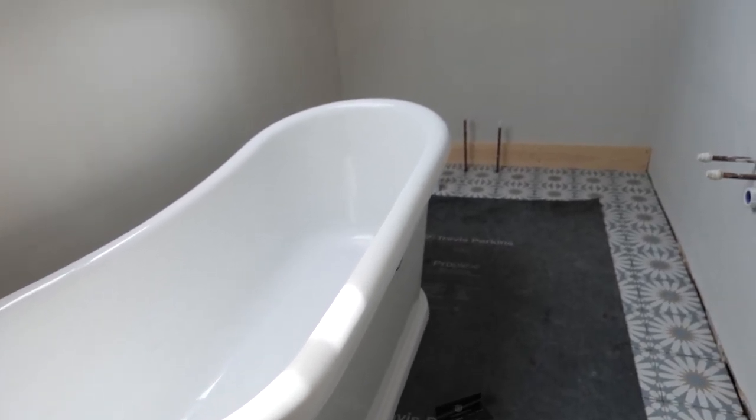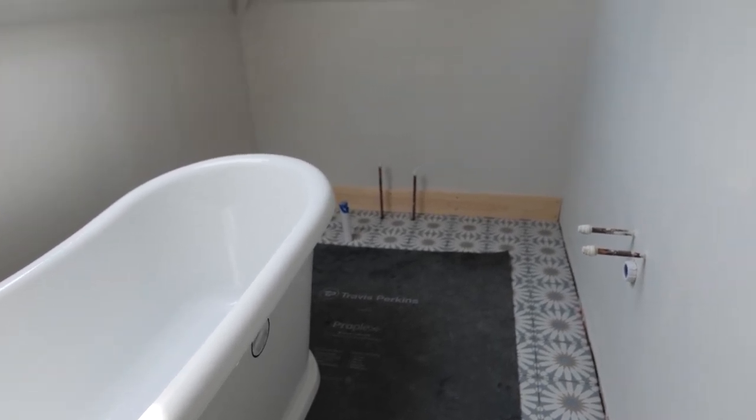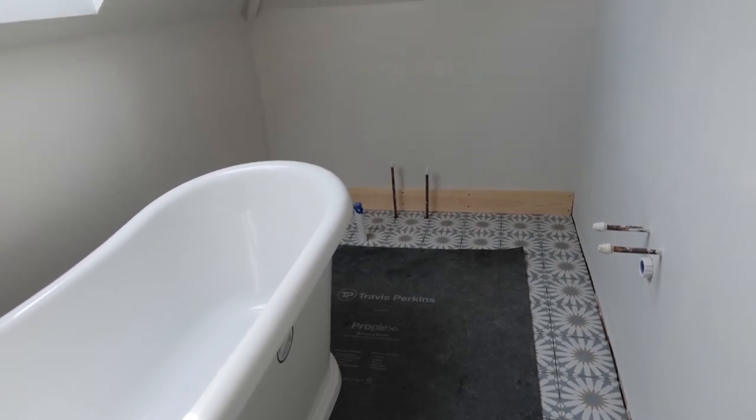First thing we need to do is get the bath in. We just lifted this up two storeys—luckily it's nice and light. The reason we've got the bath in first is we need to determine how high the taps need to be set. We've got the bath in and then we can start setting up the taps.